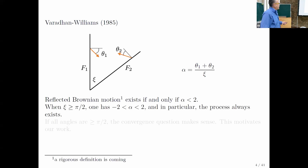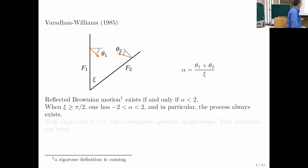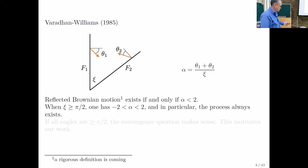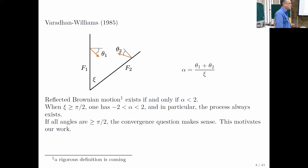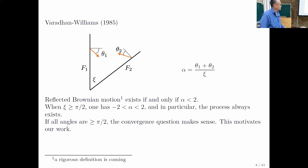In particular, when psi is pi over two or higher, you notice that alpha is always, by definition, between minus two and two. Therefore, the process always exists. So you can rephrase the question: in a case where all angles are pi over two or higher, does convergence hold? Because then at least the candidate limit process is well defined.